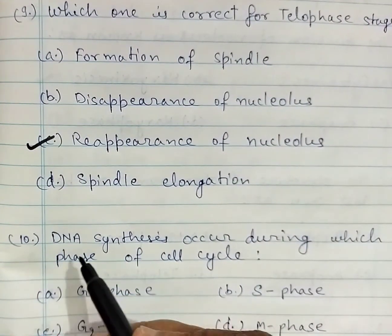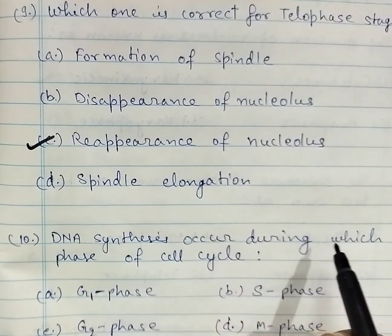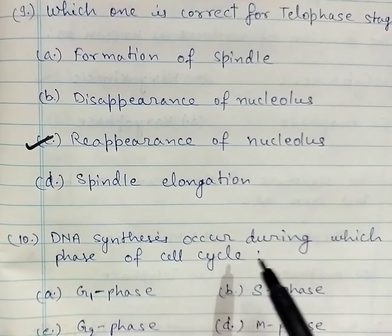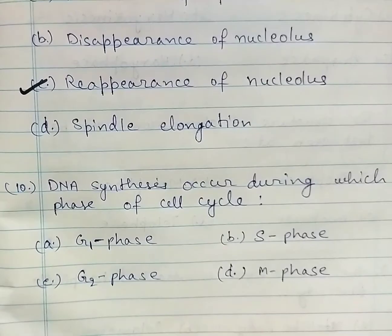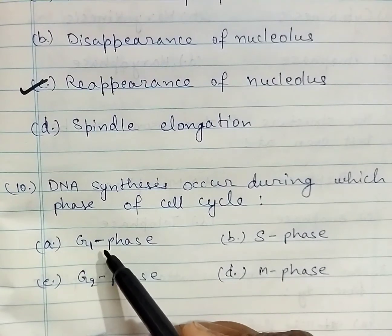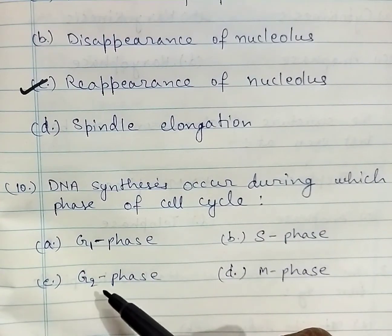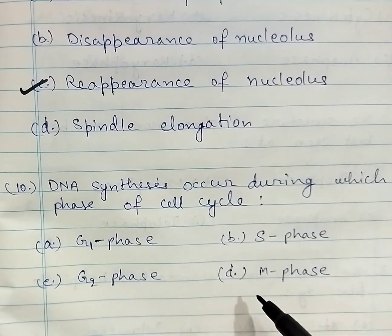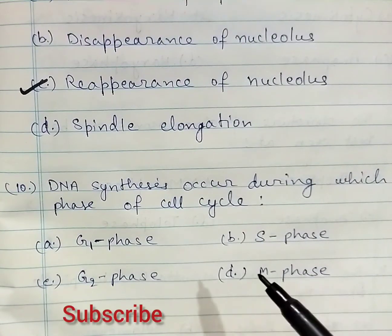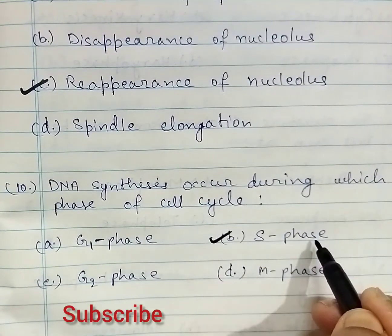Question number ten: DNA synthesis occurs during which phase of the cell cycle? A: G1 phase, B: S phase, C: G2 phase, D: M phase. The correct answer is B: S phase.